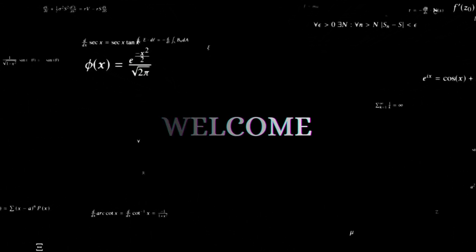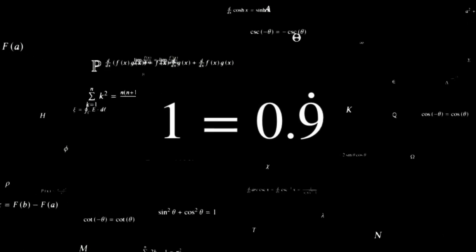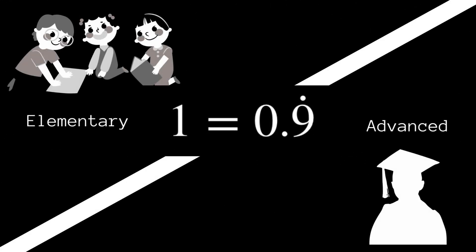Welcome to our math adventure. In this video, we will prove the seemingly paradoxical statement 1 equals 0.9 repeating, examining it at two different difficulty levels.